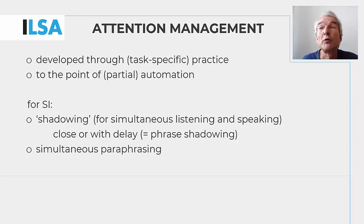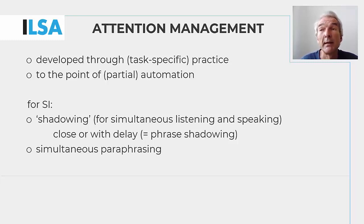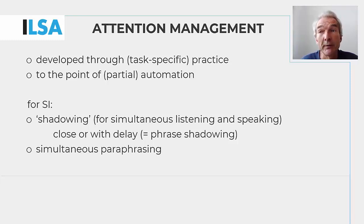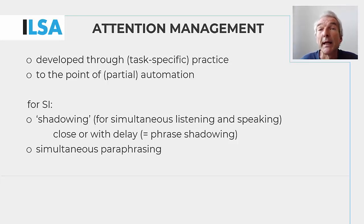For simultaneous interpreting, this is what Unit 4 of this ILSA course module is all about. In the present unit, Unit 2, the emphasis is on two types of preliminary exercises that are specifically related to simultaneous interpreting. Others, like focused listening and cloze exercises, apply to interpreting in general. The exercises in Unit 2 are shadowing and simultaneous paraphrasing. Both involve the skill of listening and speaking at the same time, in the same language. While shadowing only requires verbatim repetition, either immediately or with a delay of a couple of seconds – which is called phrase-shadowing – paraphrasing requires re-expressing the content in other words and syntactic structures. These two exercises are explained in greater detail in the learning resources offered in this unit.